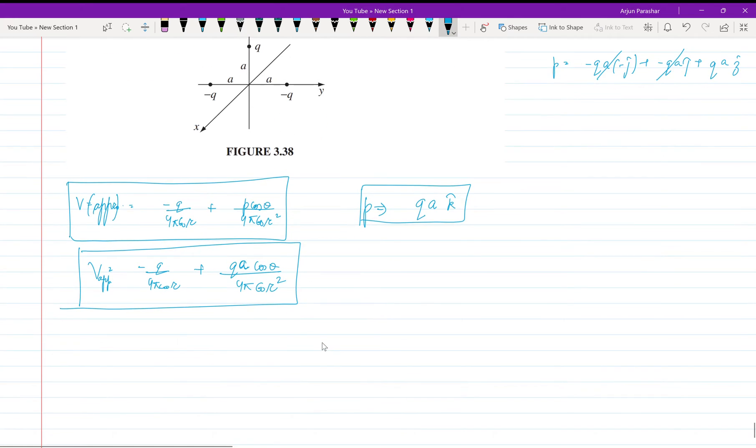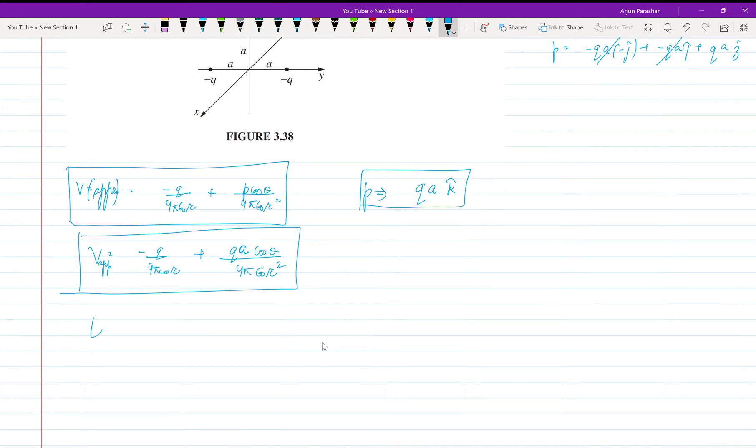Now we need to find the electric field. Electric field, we very well know, is the gradient of potential. What is the formula for gradient of potential? It is del V over del R, R cap, plus 1 upon R, del V upon del theta, theta cap, plus 1 upon R sine theta, del V upon del phi, phi cap. I hope you remember this formula. If you don't, please make sure you remember it. On putting the values here we get...